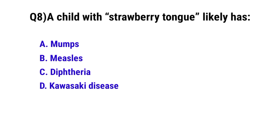Question number 8: A child with a strawberry tongue likely has? The correct option is D: Kawasaki disease.